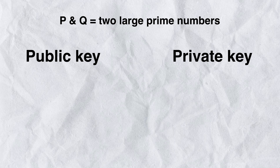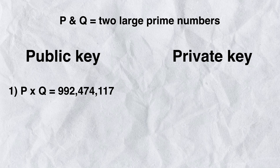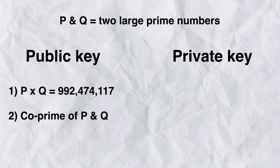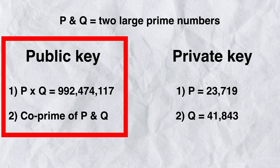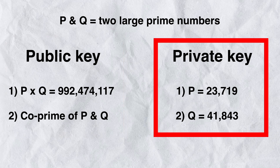The public key consists of two inputs: one, the product of two large primes — for example, 992,474,117 — and a co-prime number of these two prime numbers. Whereas the private key consists of the two prime factors of 992,474,117, which are 23,719 and 41,843. Before sending, the message is encrypted using the public key, and then the recipient uses the private key to decipher it back to the plain text.